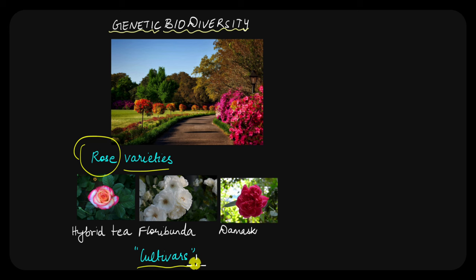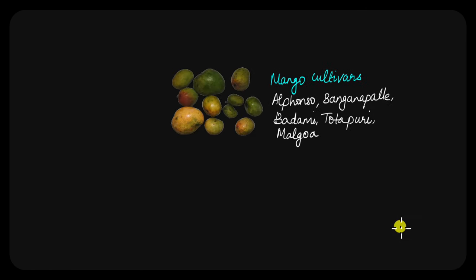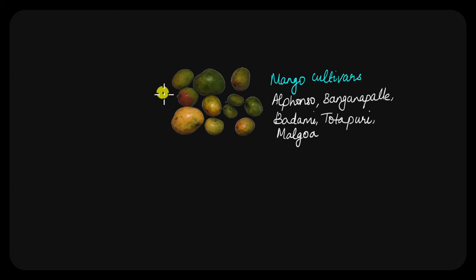They have different genes which express different proteins, which gives rise to this genetic biodiversity. All these varieties or cultivars are very important in maintaining a variety of genes in the gene pool. You can see this variety even when we talk about mangoes — different types like Alphonso, Banganapalli, Badami, Malgoa. They all look different, taste different, and have a different size because of their genetic differences.